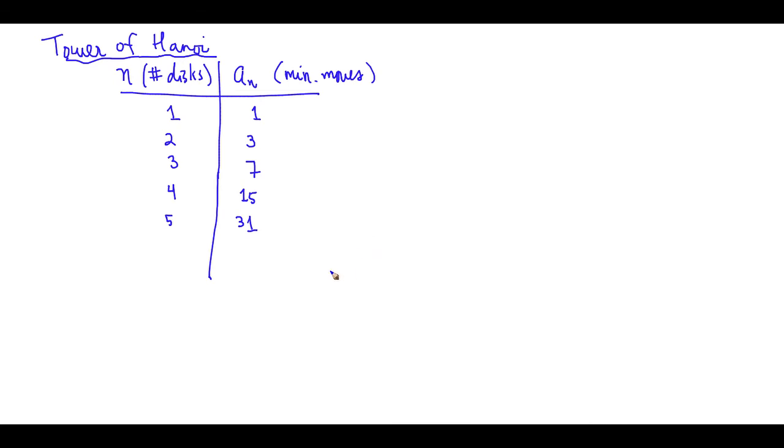So what we want to do now is to find if there is a pattern between n and a sub n. n is the number of disks in the Tower of Hanoi game and a sub n is the minimum number of moves necessary to solve the game.